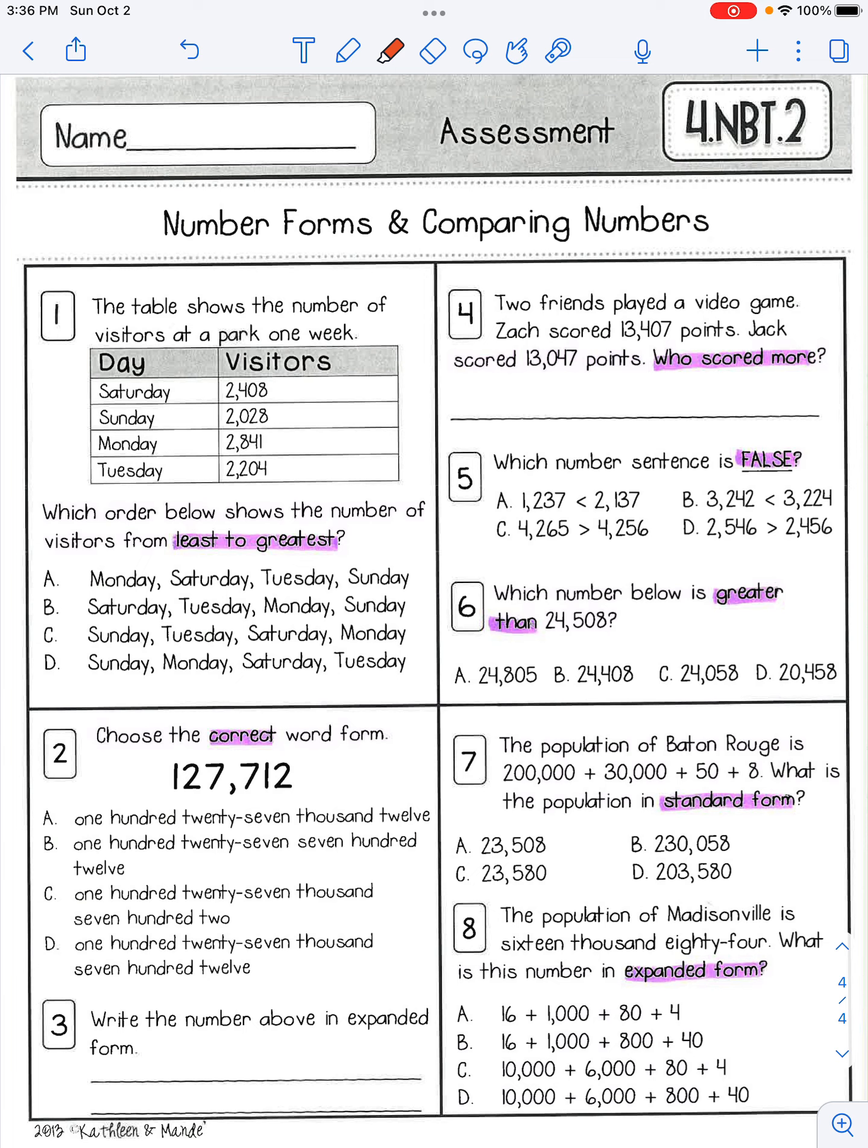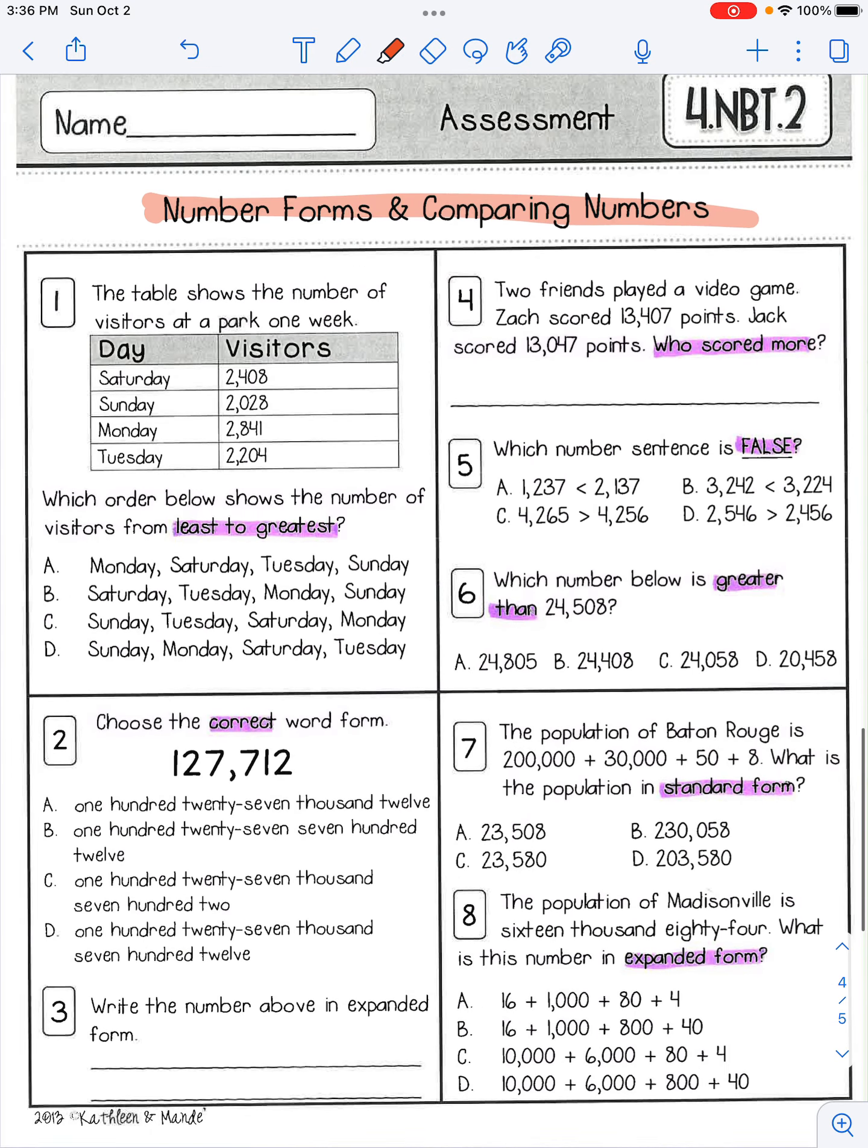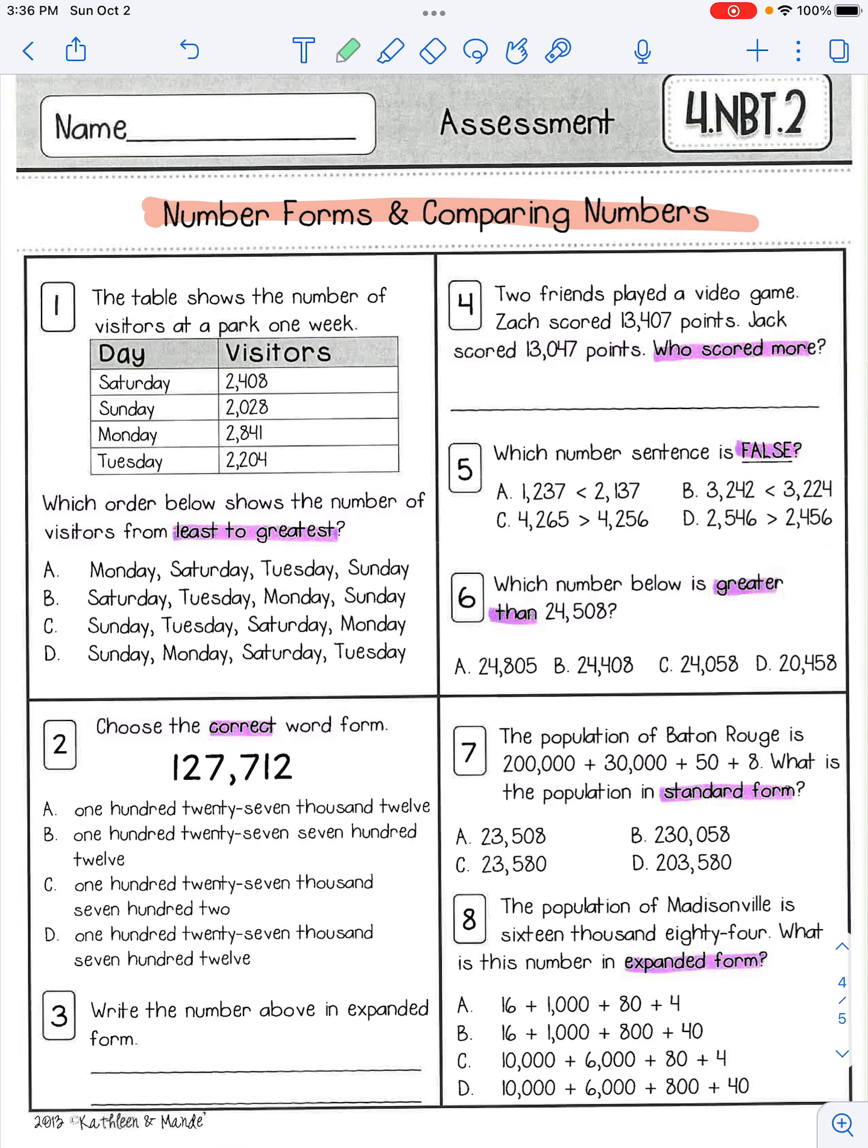And then we have our math page. This is number forms and comparing numbers. So this is all that we've been learning. You have seven questions. Question number one says the table, number one, the table shows the number of visitors at a park a week, one week.